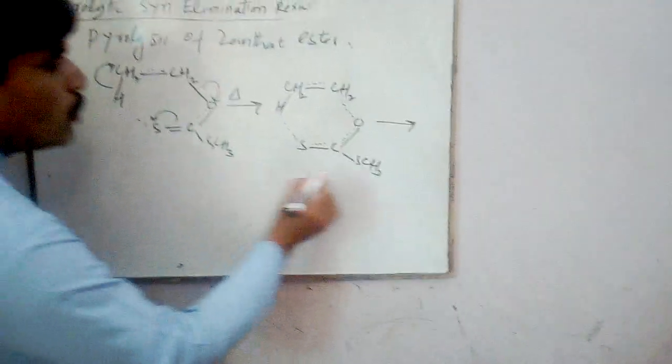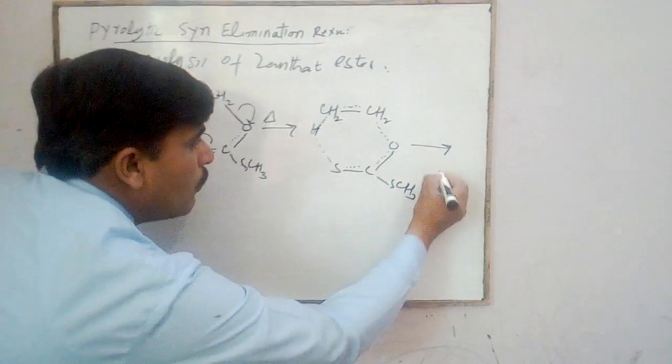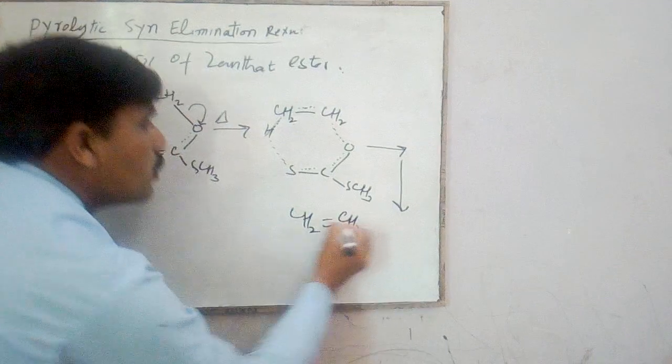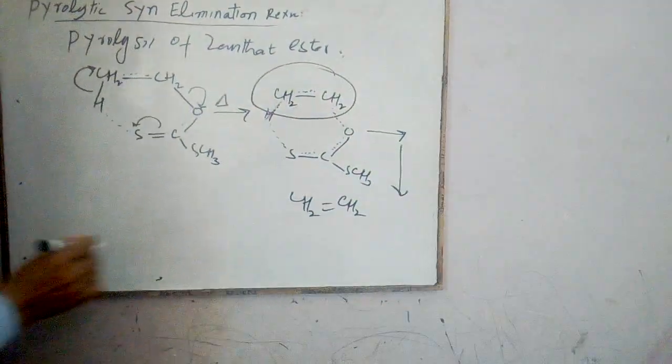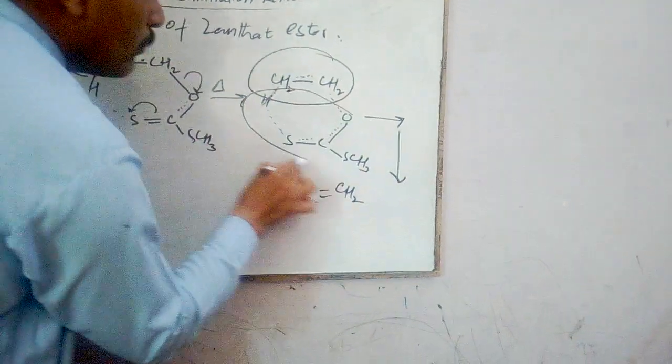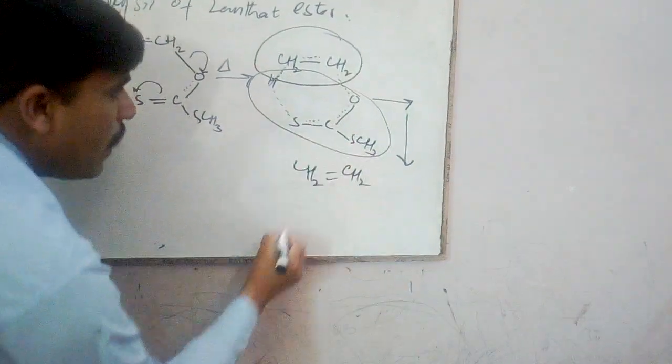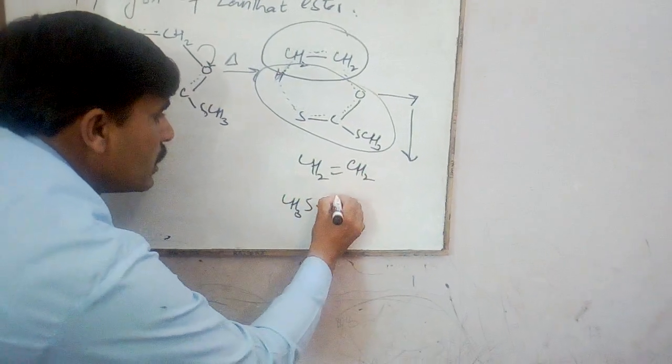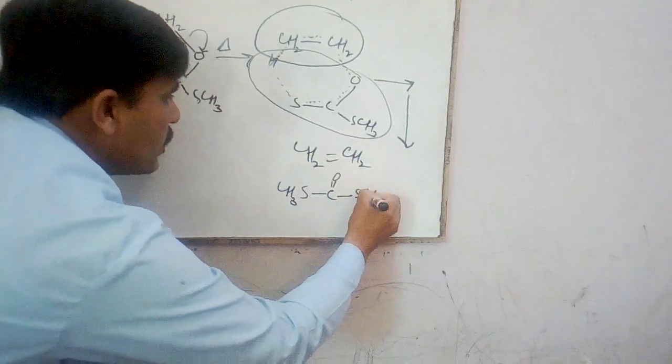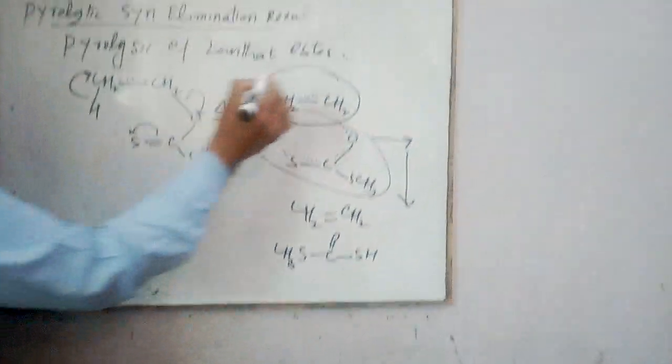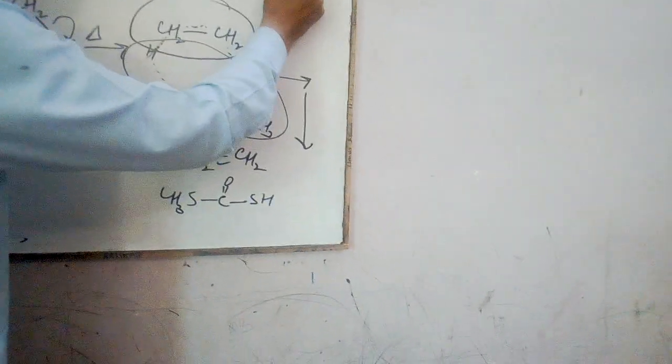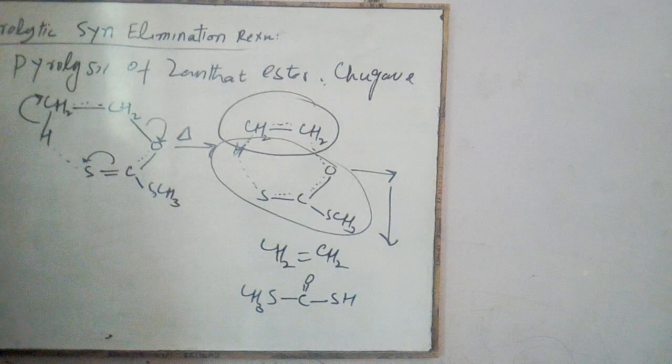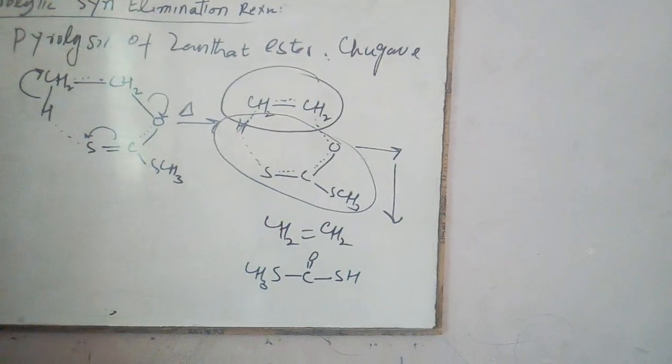From the cyclic transition we will get the final product. The final product will be obtained as CH2 double bond CH2. The second part is CH3-S, C double bond O and SH. This is said to be as Chugaev reaction, the pyrolysis of xanthate esters. Its special name is Chugaev reaction.